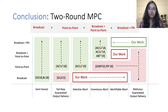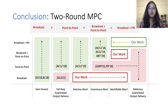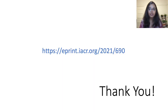To conclude, we complete the feasibility landscape of two-round MPC in different communication models with varying security guarantees. As a result, we establish the following hierarchy of communication models. Our results also explain the use of specific communication channels and computational assumptions in existing two-round MPC protocols. Thank you.